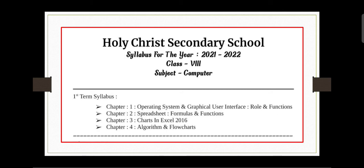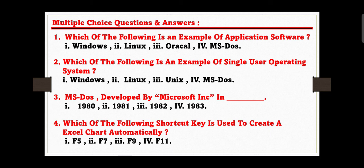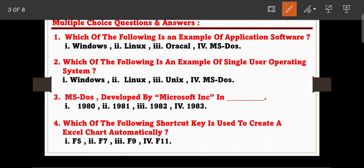The first multiple choice question is: which of the following is an example of application software? The options are: option one, Windows; option two, Linux; option three, Oracle; and option four, MS-DOS. Option number three is the correct answer. Oracle is an application software, while Windows, Linux, and MS-DOS are examples of system software.